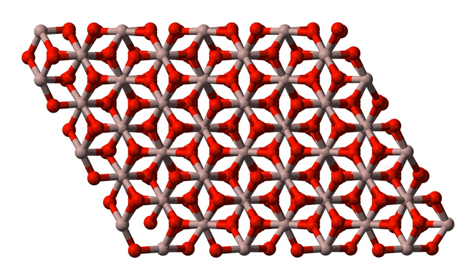Catalysis: Aluminium oxide catalyzes a variety of reactions that are useful industrially. In its largest scale application, aluminium oxide is the catalyst in the Claus process for converting hydrogen sulfide waste gases into elemental sulfur in refineries. It is also useful for dehydration of alcohols to alkenes. Aluminium oxide serves as a catalyst support for many industrial catalysts, such as those used in hydrodesulfurization and some Ziegler-Natta polymerizations.